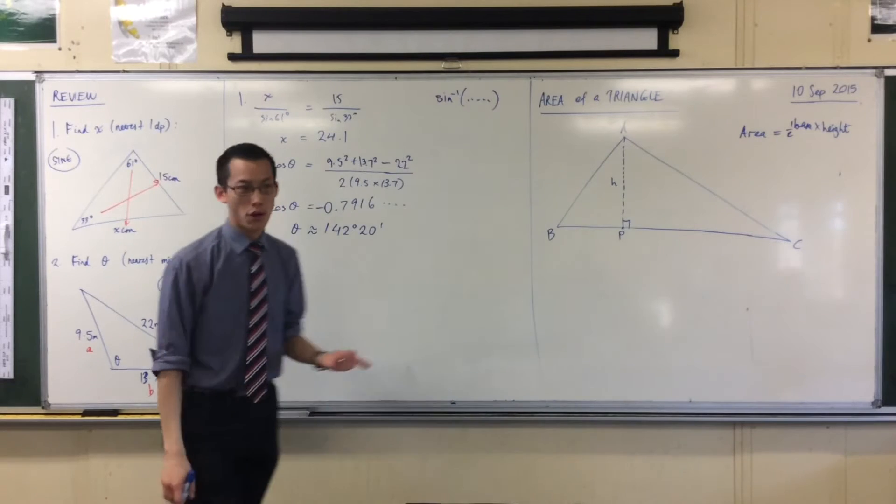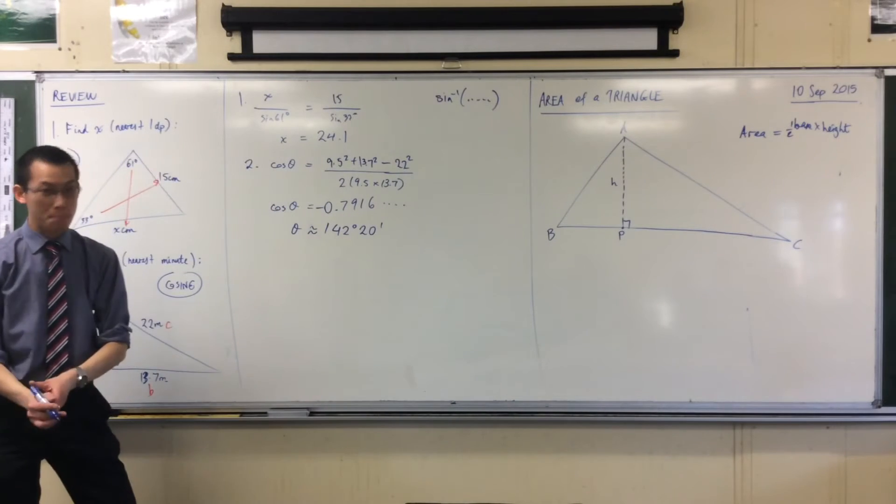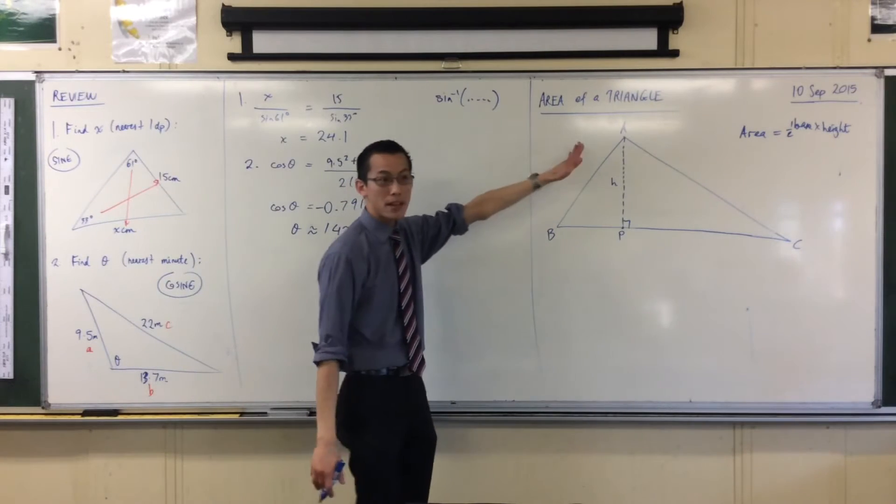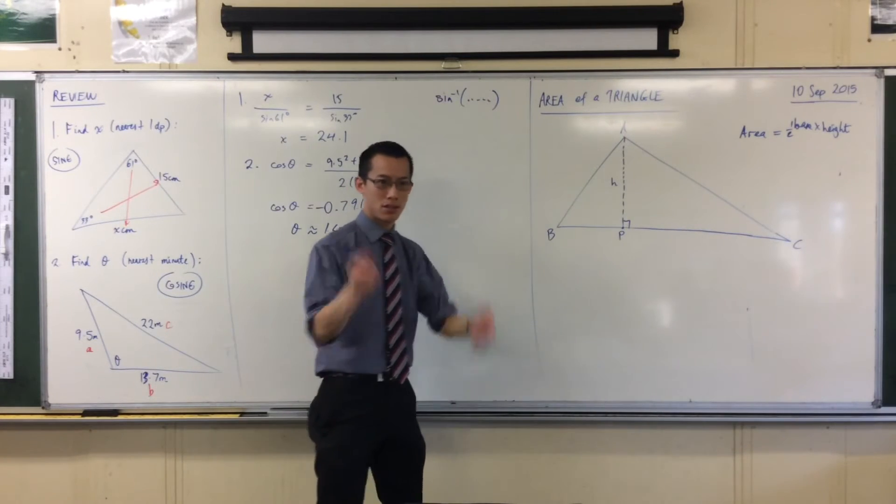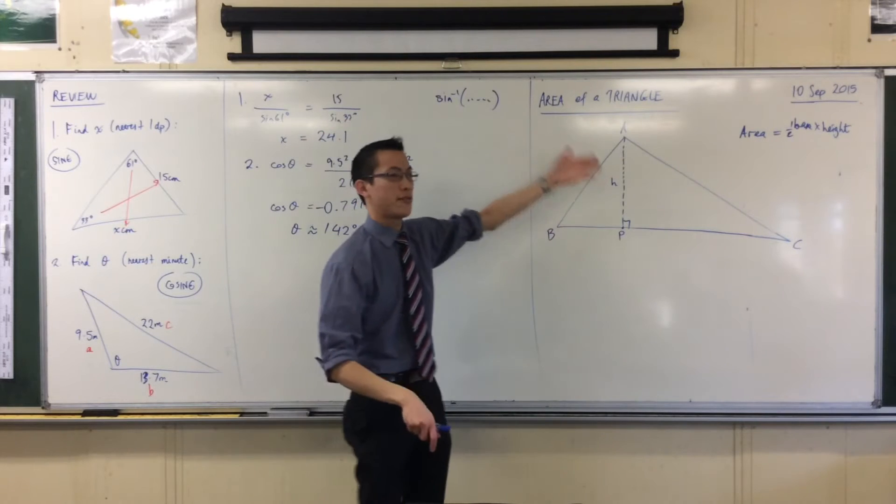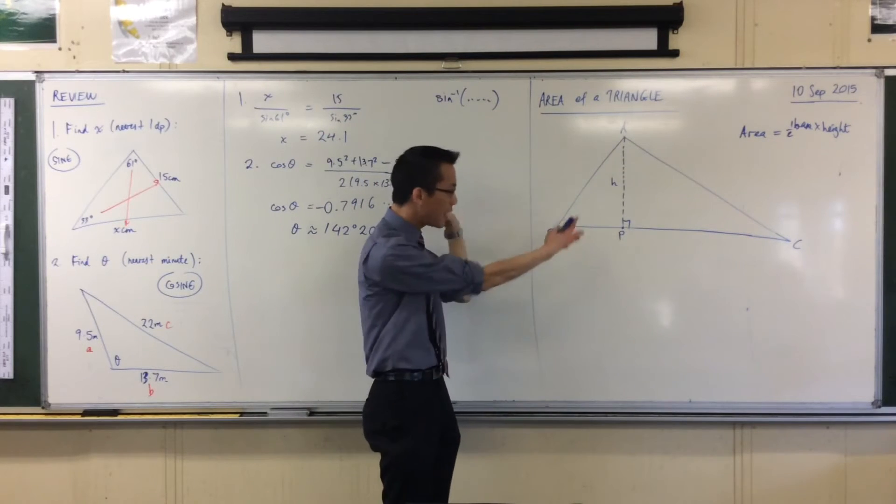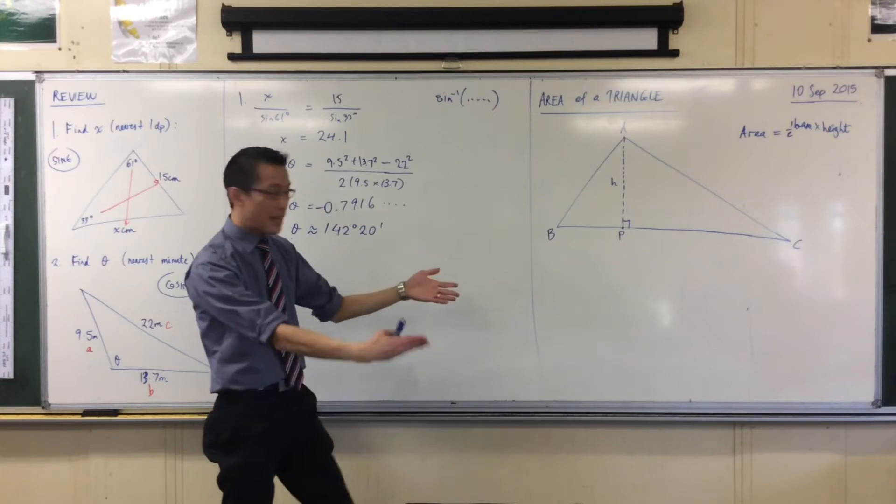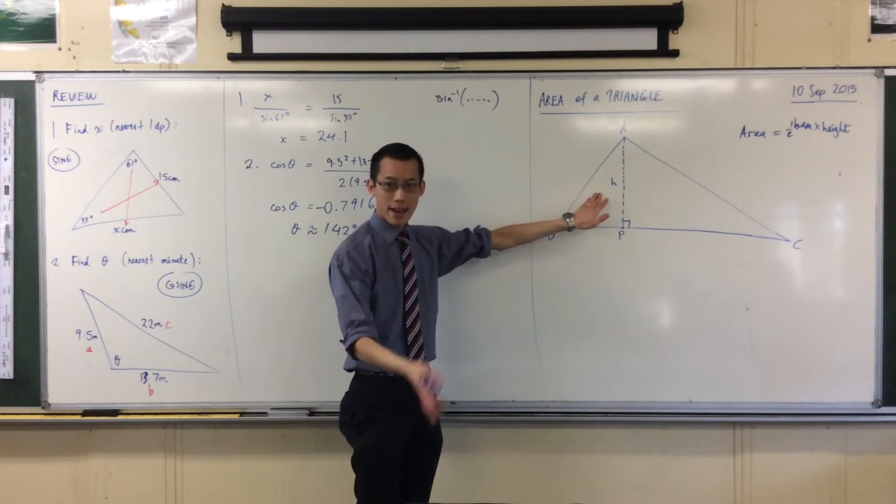Now, just before I move on, we didn't have to make BC the base. I know it's at the bottom, but AC could be the base as well or AB could be the base. You can make any of them the base. You just turn the thing around and you'll have a different perpendicular height. But just so we're on the same page, we'll keep with this one. Now, if I know BC and I know H, I can get the area.